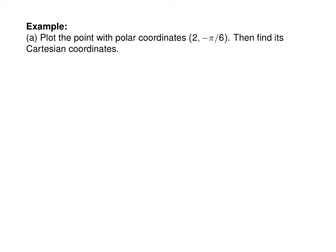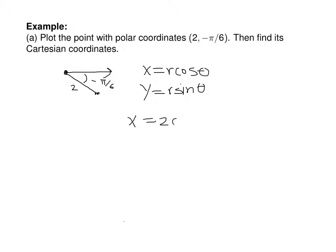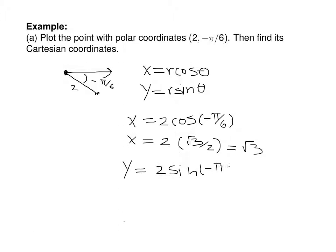After parametrized curves, we discussed polar coordinates and polar curves. To plot (2, −π/6) and find Cartesian coordinates: we need a line segment of length 2 at angle −π/6. x = r cosθ = 2cos(−π/6) = 2·(√3/2) = √3. y = r sinθ = 2sin(−π/6) = 2·(−1/2) = −1. So the Cartesian coordinates are (√3, −1).